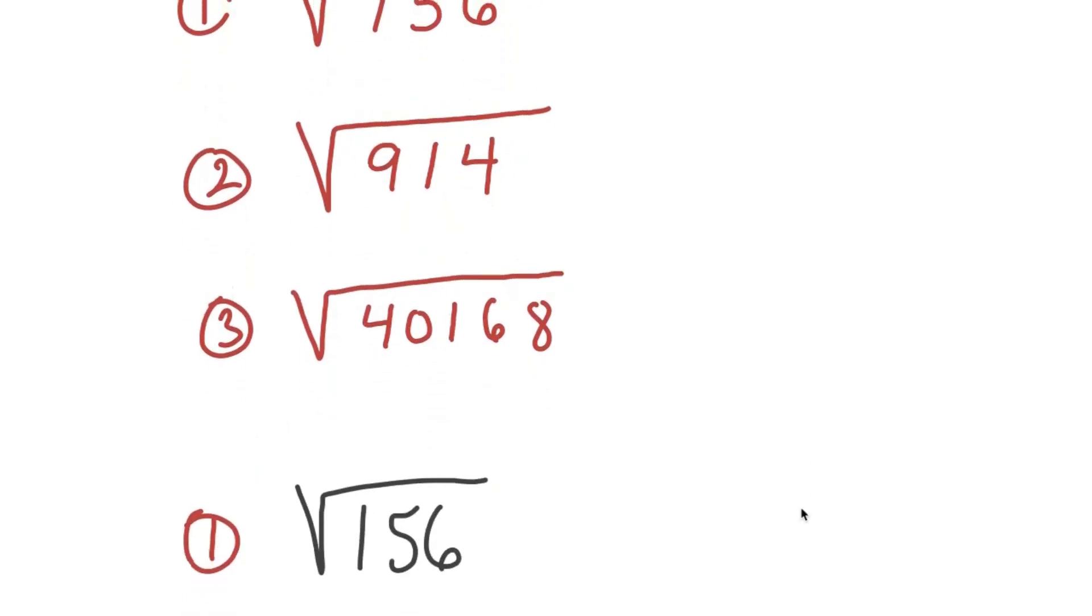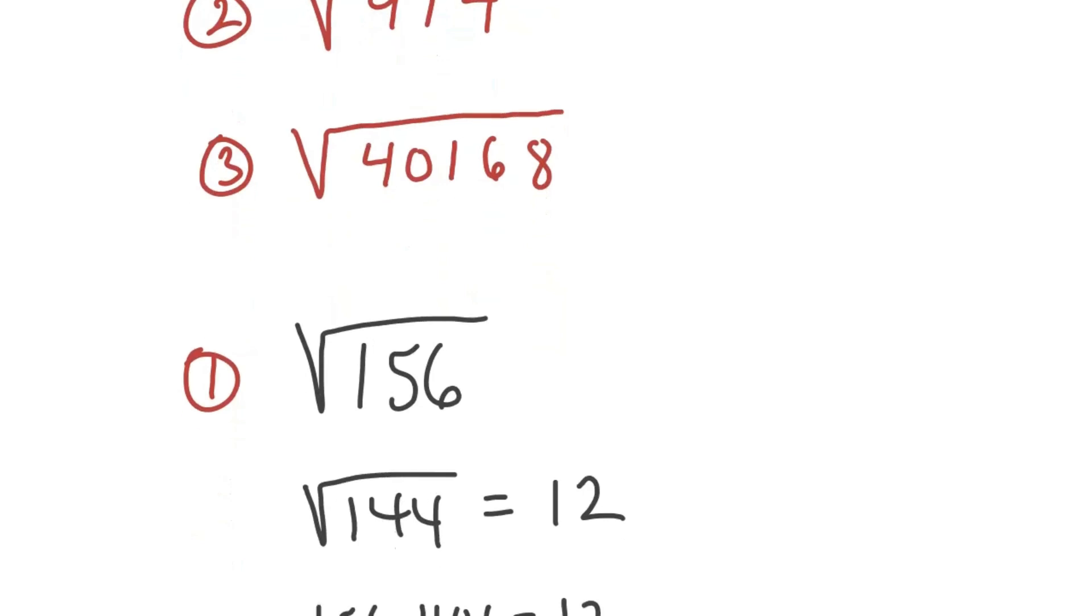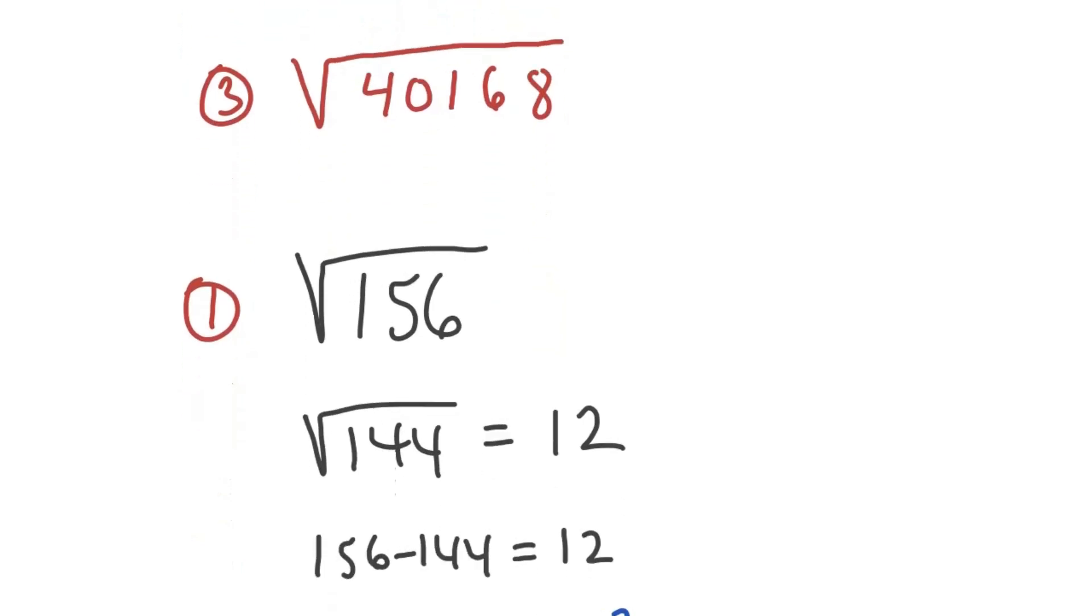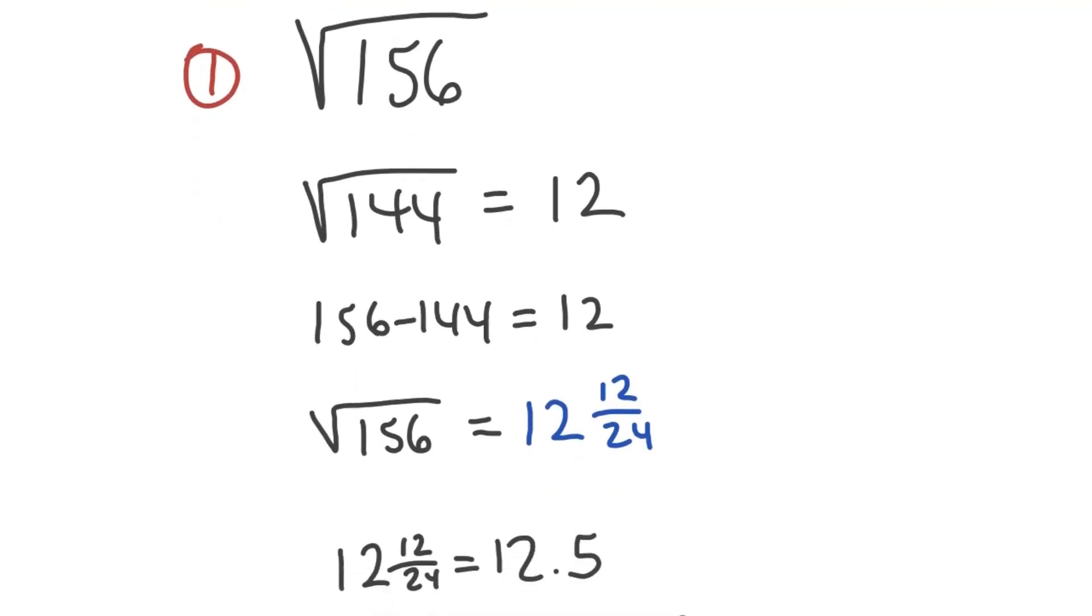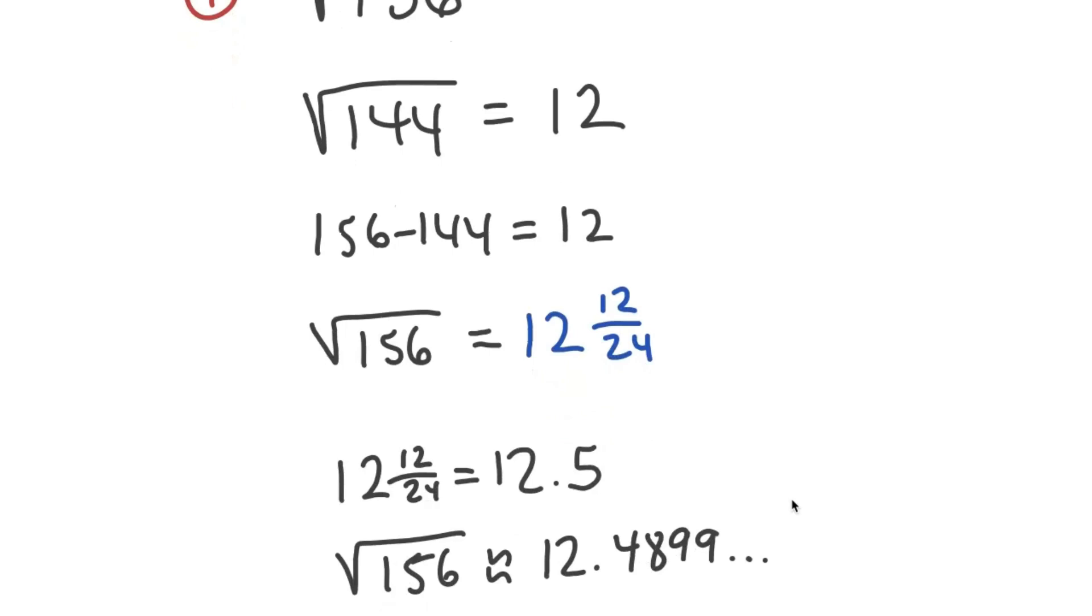Okay, let's start off with square root 156. The largest perfect square underneath that, square root 144, that's 12. Find the difference, there's also 12. So square root 156 equals 12 and 12 over 24, simplifies to 12.5. Actual value is 12.4899.